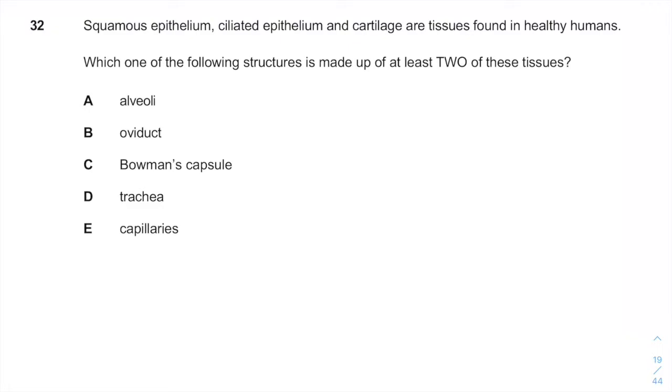So if you see the question, you have epithelium and cartilage tissues and they are asking you which one of the structures is made up of at least two of these tissues.